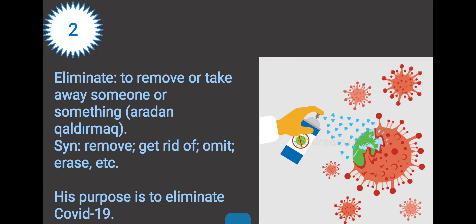For example: poisonous vapors burst out of the factory during the accident. Word two: eliminate. Eliminate is to remove or take away someone or something. It's translated into Azerbaijani as 'aradan qaldırmaq', 'ləğv etmək'. The synonyms are remove, get rid of, omit, raise, etc.